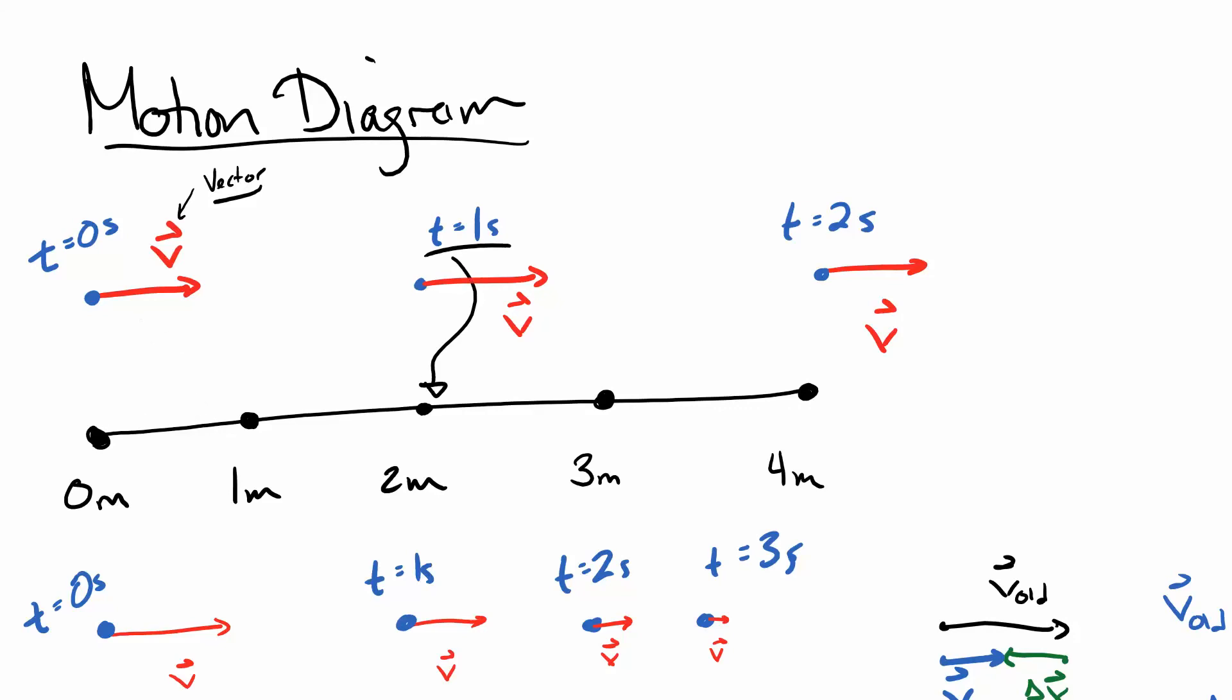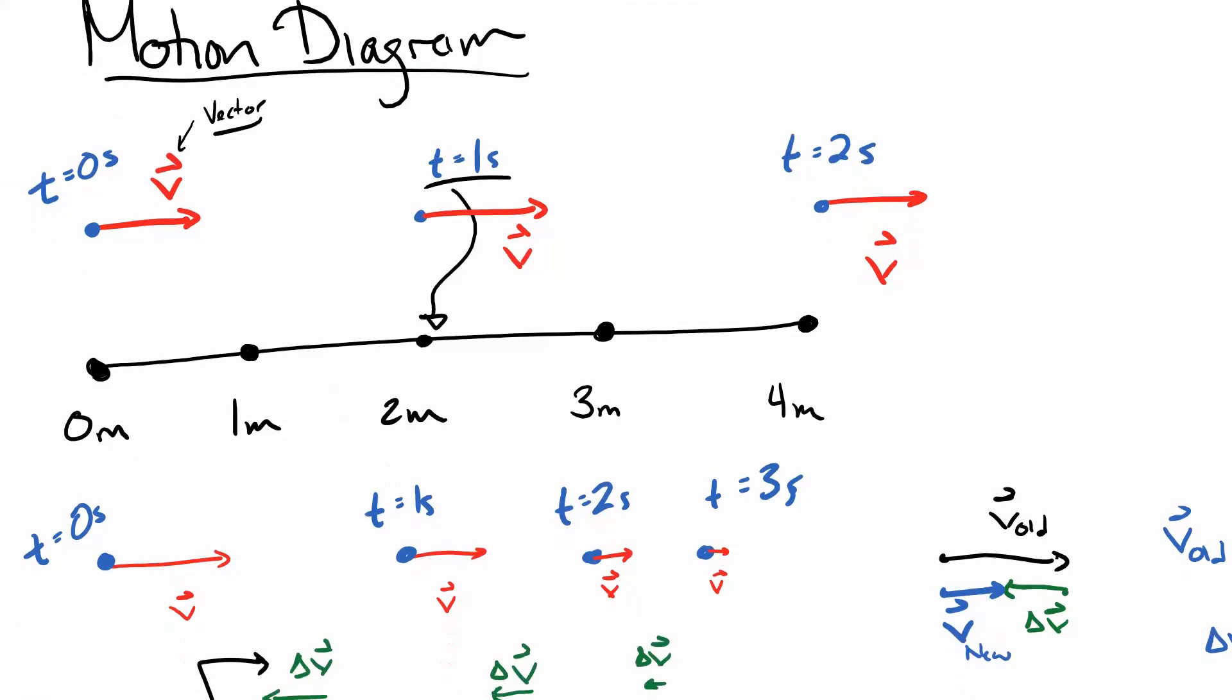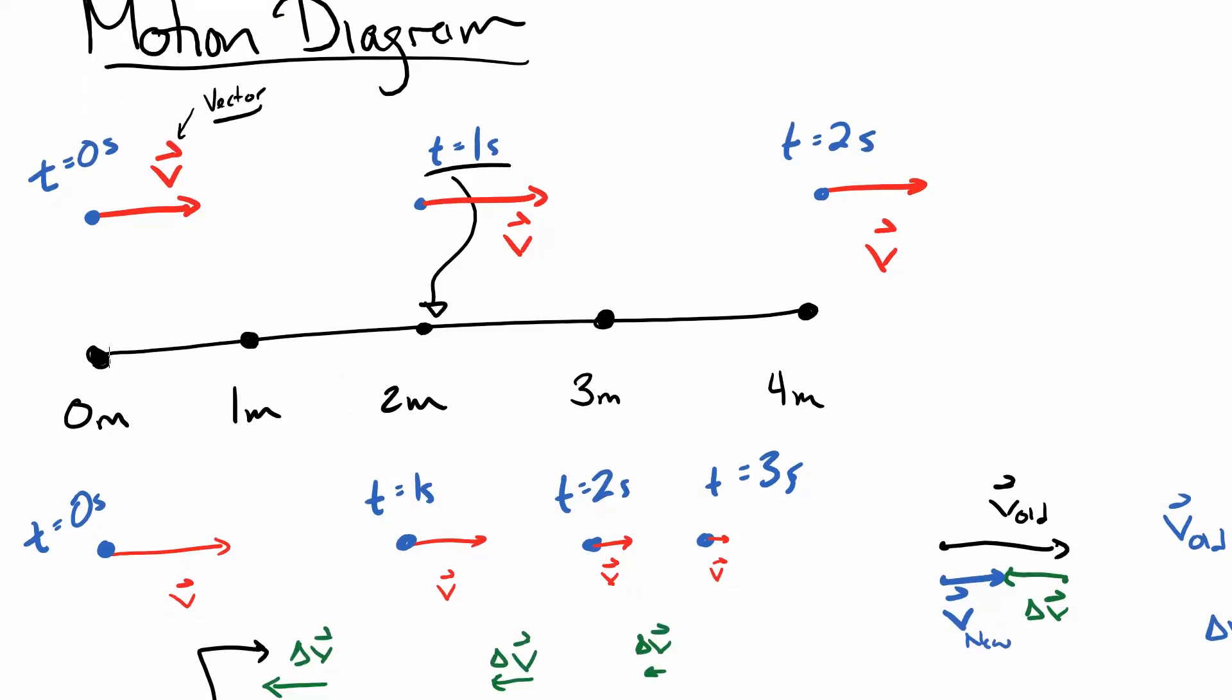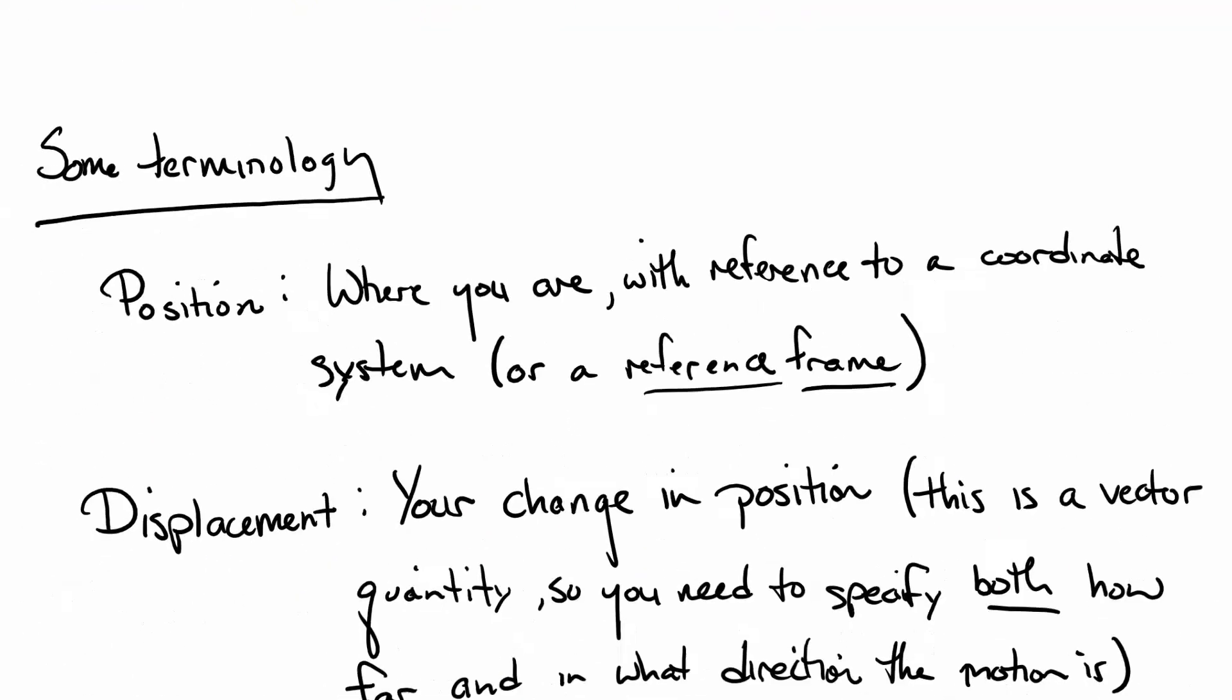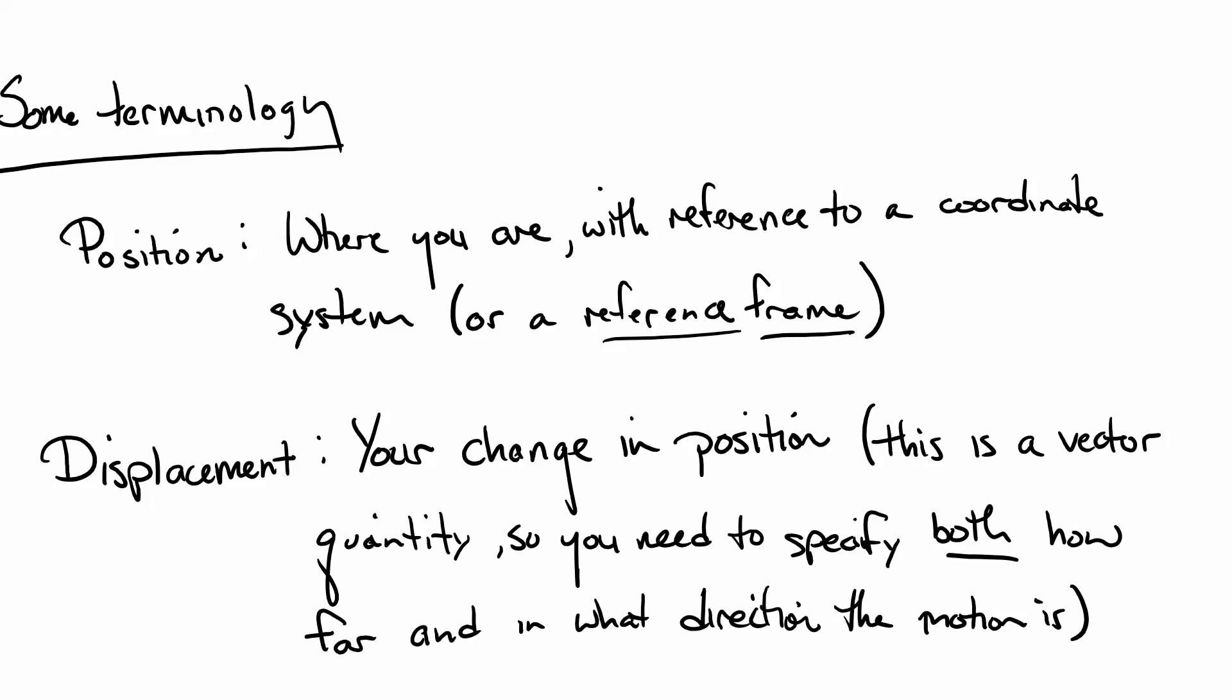The idea is we're pulling out a lot of the details that we don't need so we can focus on the stuff that's relevant. Now, your displacement is your change in position. Notice what we got here, this change in again. So a position we're often going to represent as x. Your displacement will then be delta x, the change in position. This is going to be a vector quantity. Both of these are.